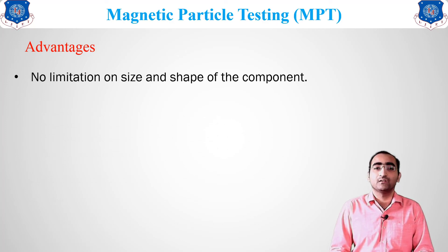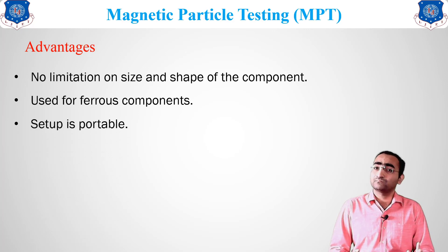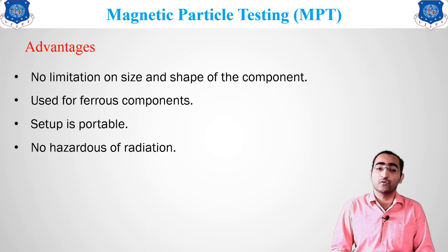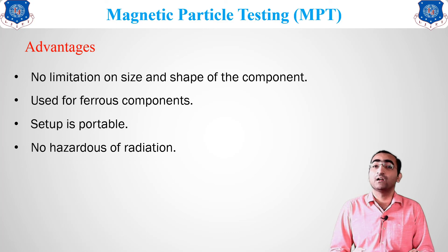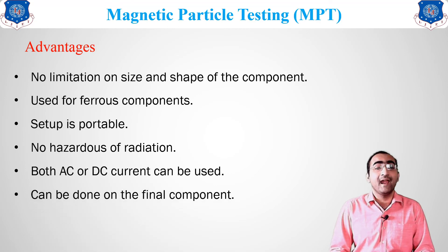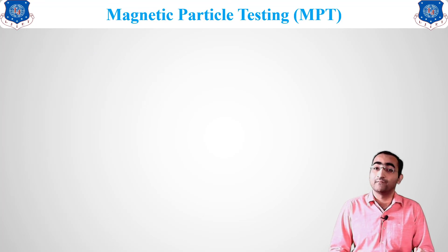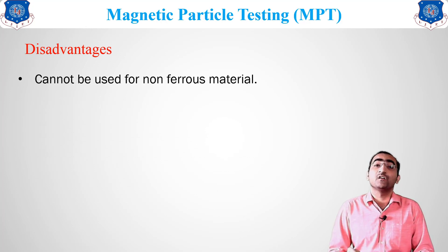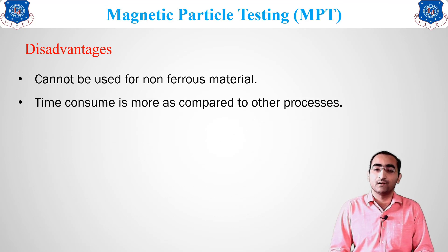The advantages of this method are: no limitation on the size and shape of the component, it is used only for ferrous components, the setup is portable because only magnetization equipment and magnetic particles are needed with no large machines required, there is no hazardous radiation, and both DC and AC current can be used for the magnetization method. It can also be directly done on the final component.